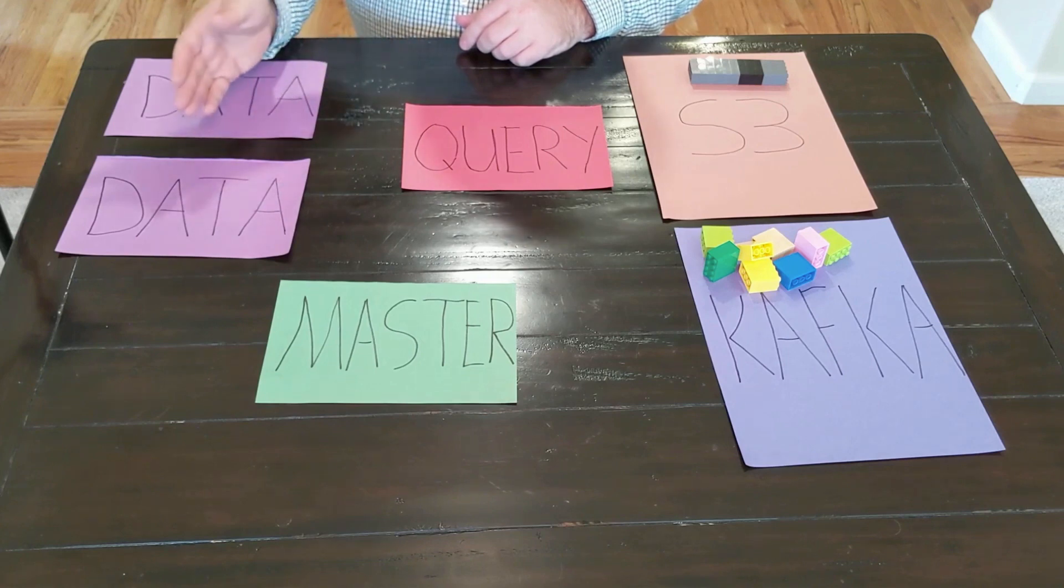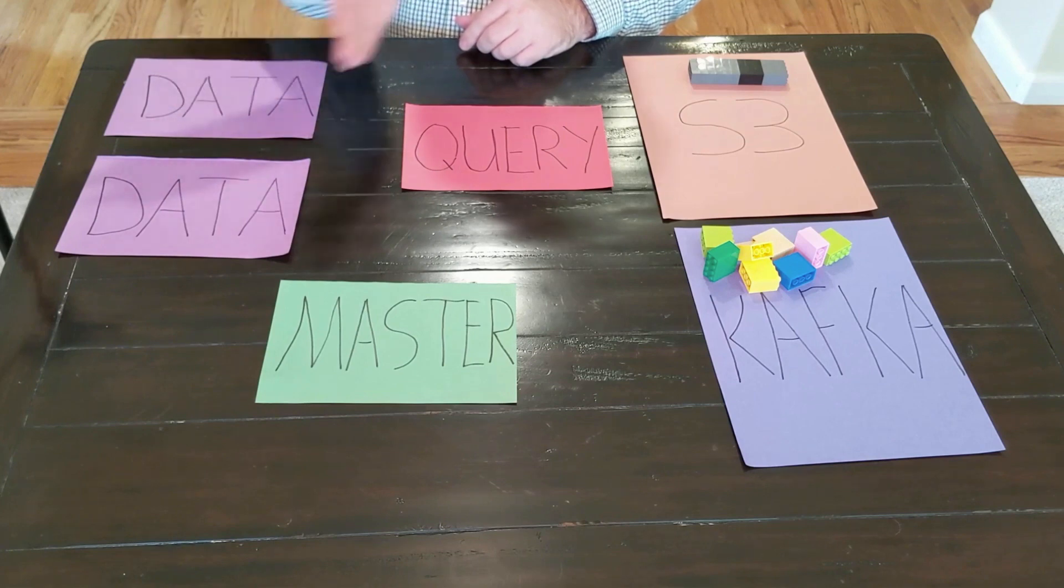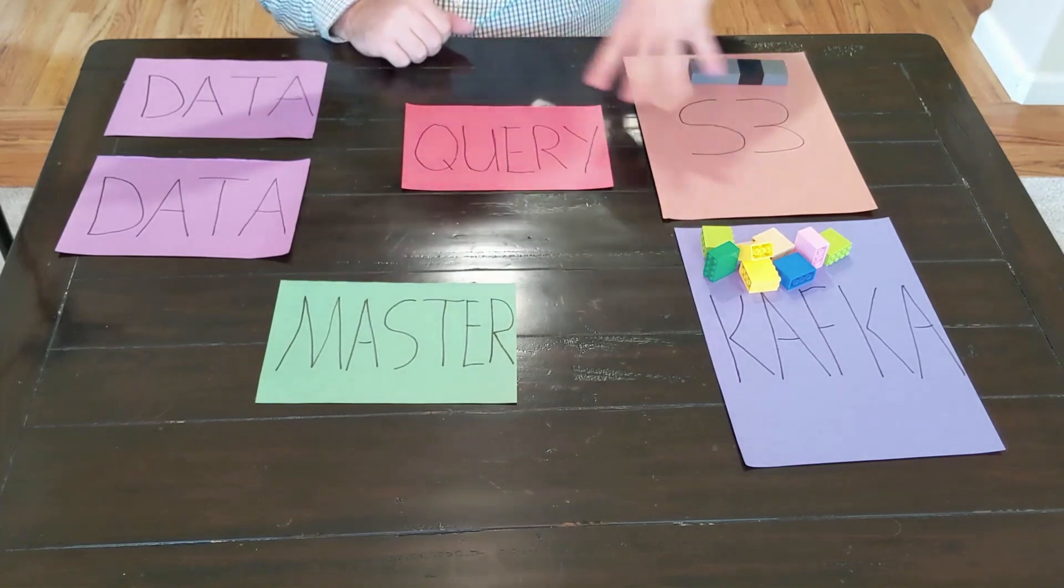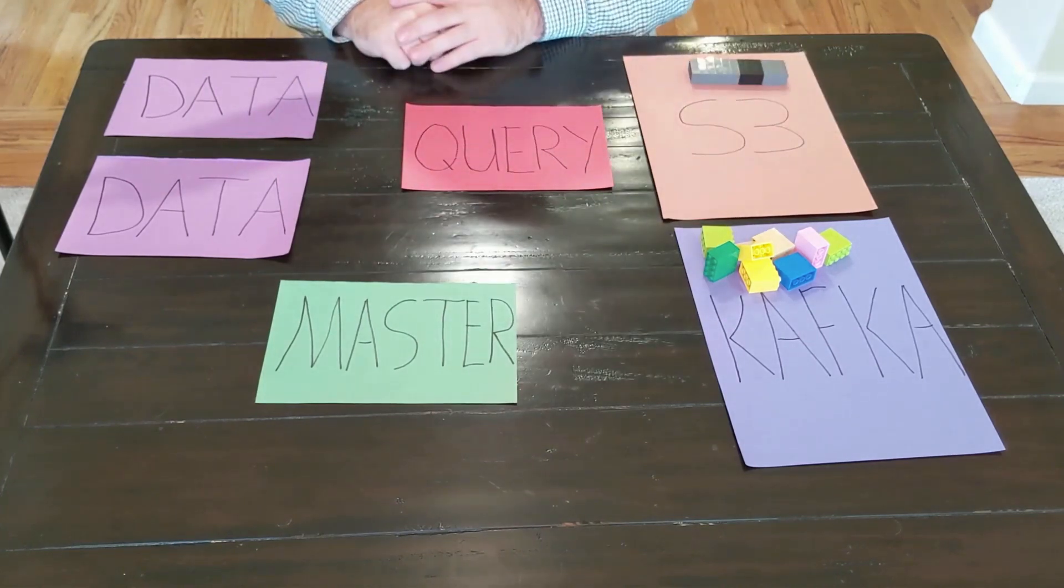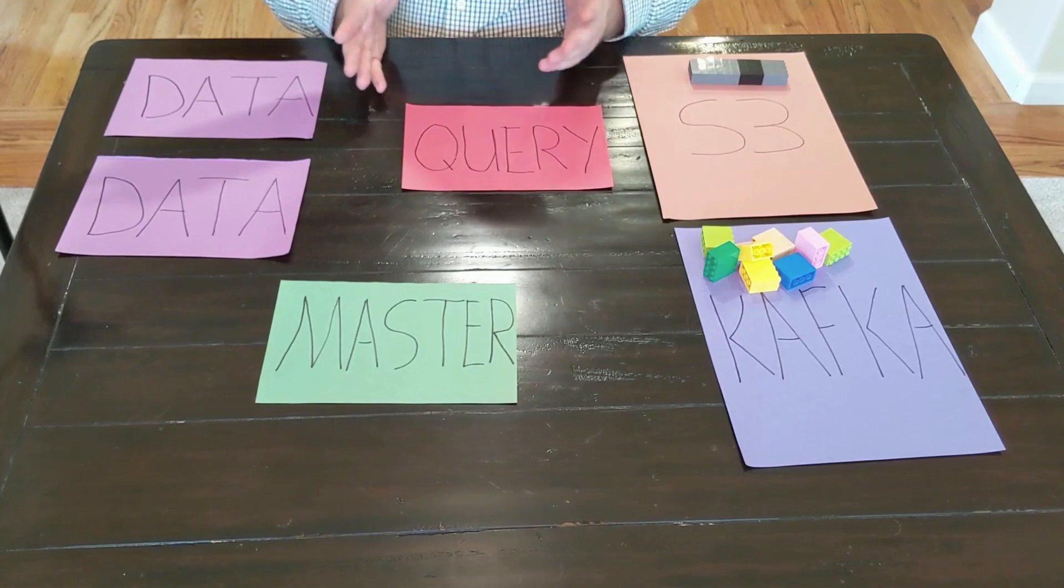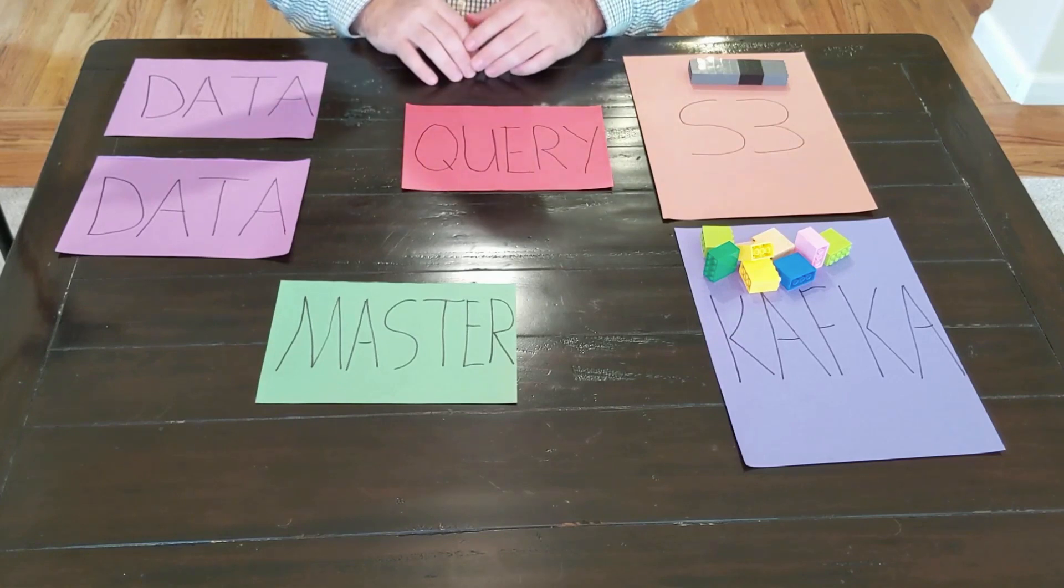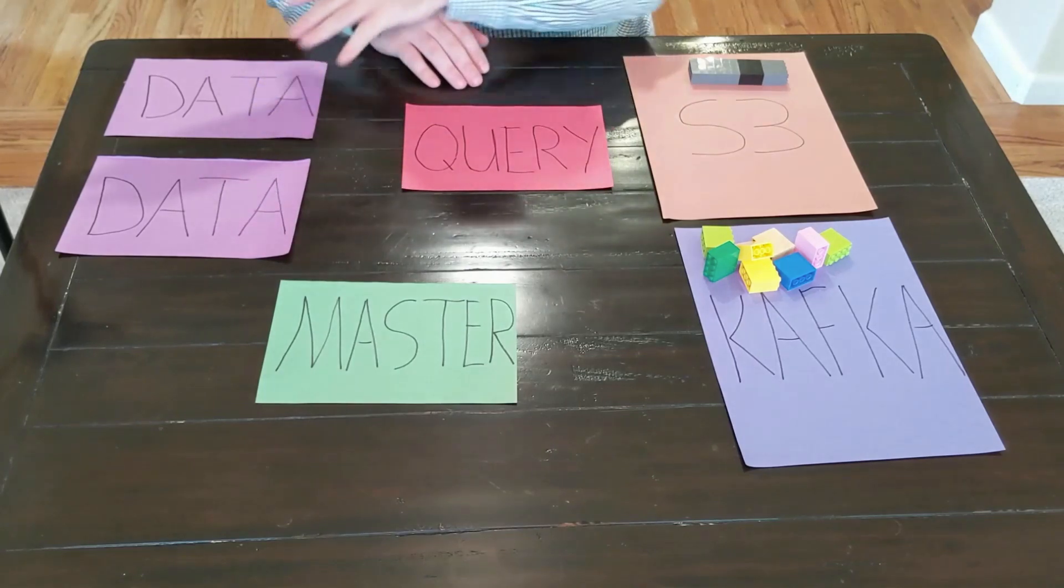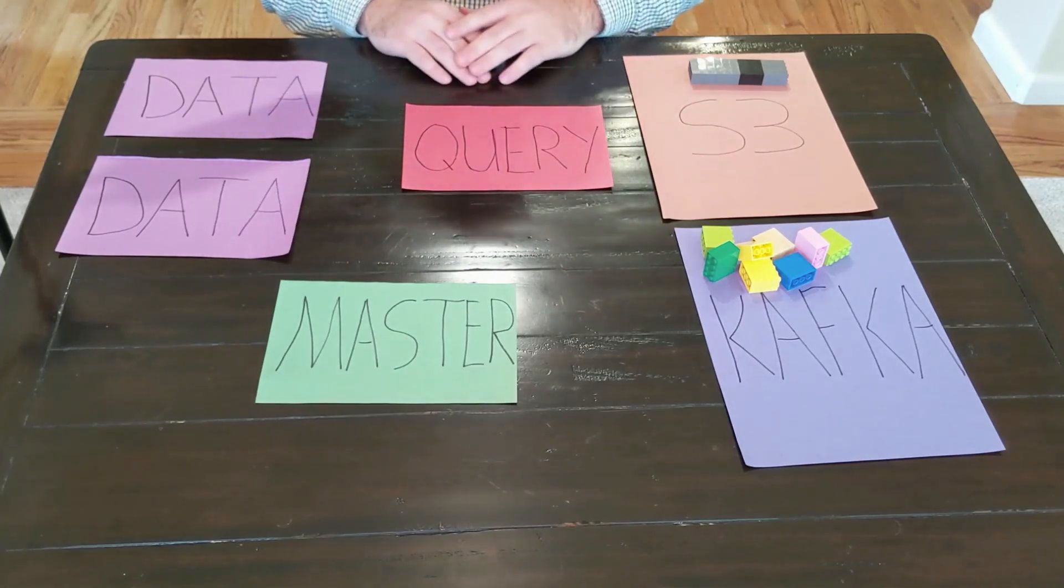These data types are important because when a query actually happens, that data goes from the data—these data server types—over to this query server type. Another thing to know is that although I just have a few cards here, normally in a Druid cluster, we would have lots of queries, lots of masters, lots of data server types, all running with their individual processes.